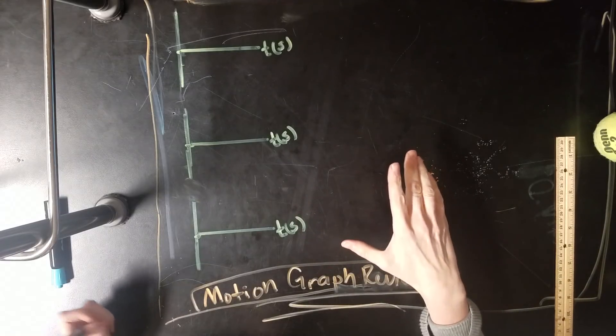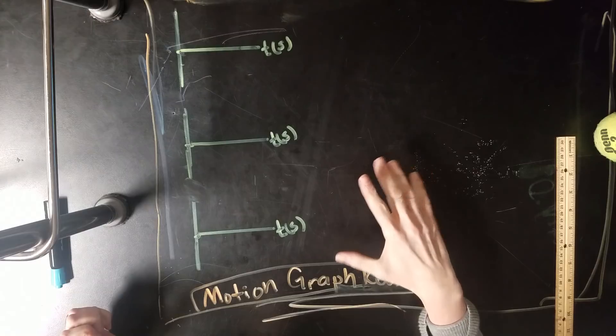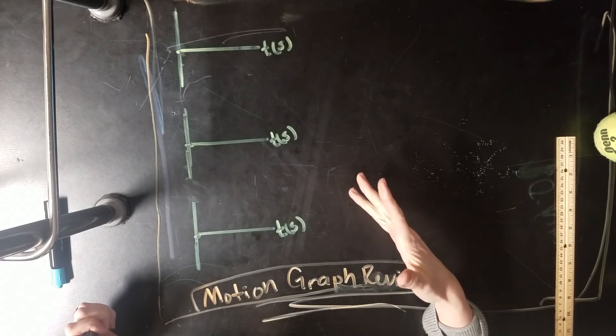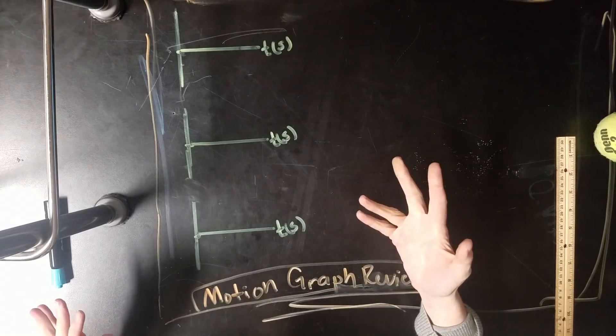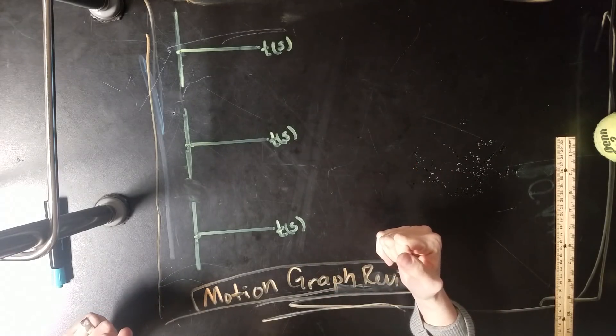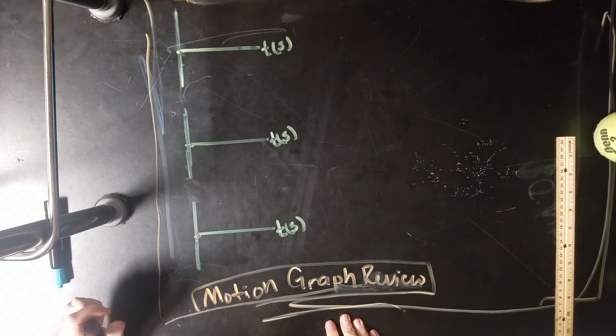Not all physics graphs have a horizontal axis or your input that is time. Sometimes it's position, sometimes it might be something weird, but we're going to deal with just your basic motion graphs, which are essentially kinematics.